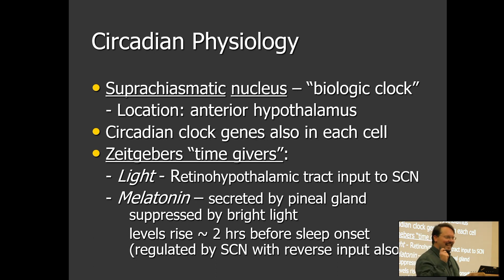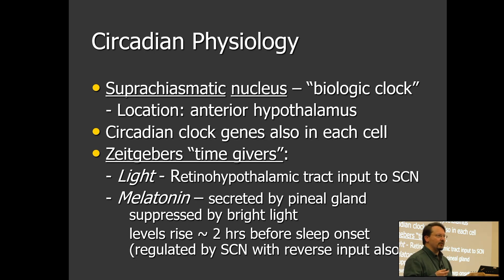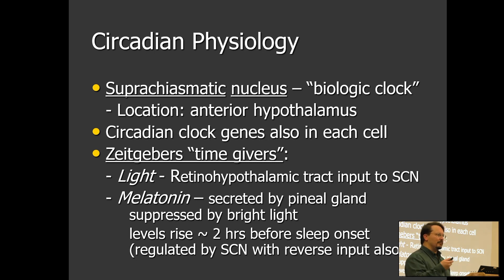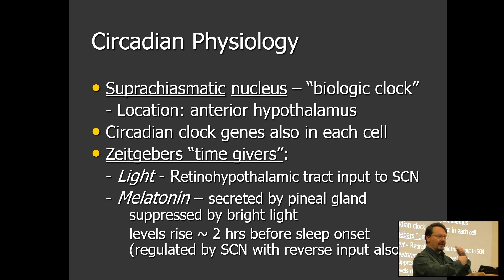Light is exogenous, or outside, while melatonin is endogenous — secreted by the pineal gland, a structure located more posteriorly in the brain. Melatonin's release is suppressed by bright light, and that connects to how we manipulate things with light therapy. Usually our melatonin level rises approximately 2 hours before sleep onset, and there is a direct feedback loop with the suprachiasmatic nucleus.